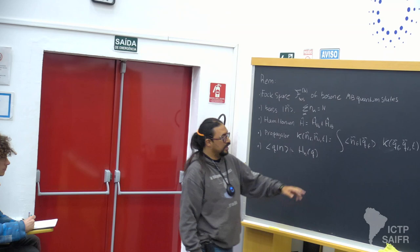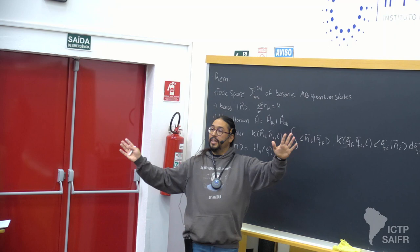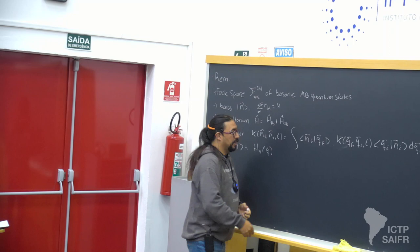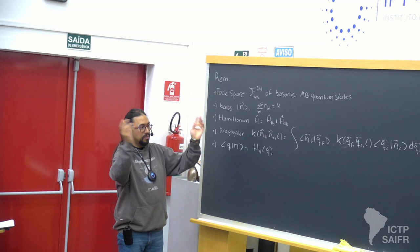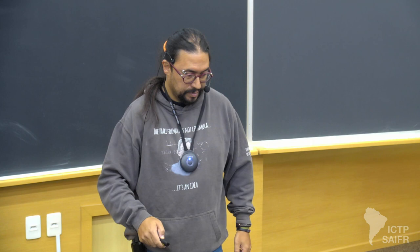For this object I can attempt a semi-classical approximation, because it looks exactly like the path integral for single-particle systems — just that the Hamiltonian is a little funny: it contains Q², P², Q⁴, P⁴. But we already found a way to deal with that, and I can write a path integral for this object.